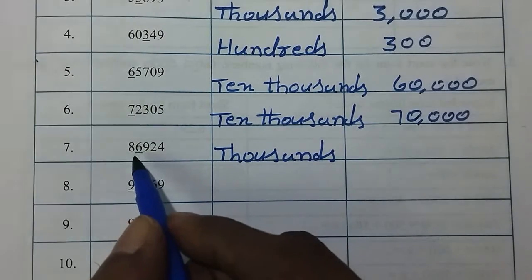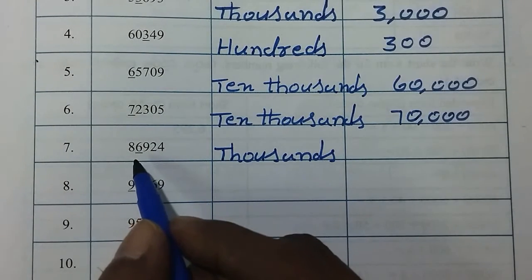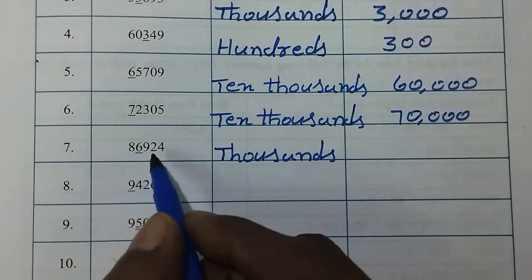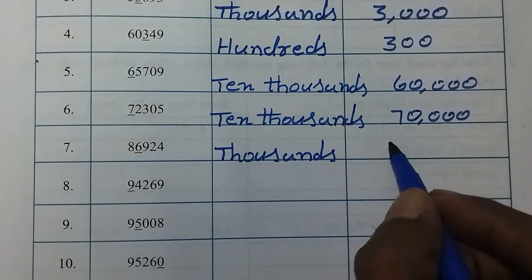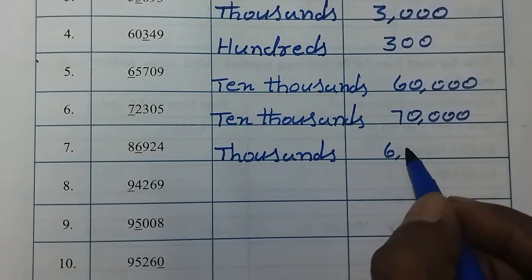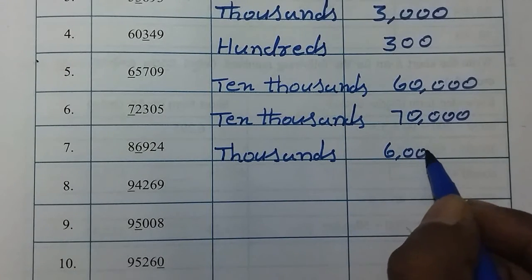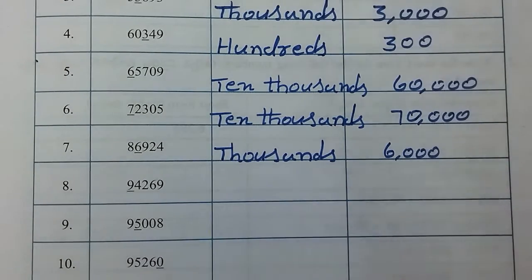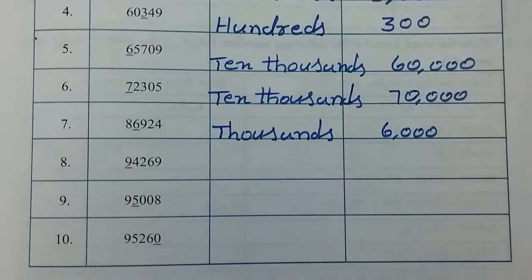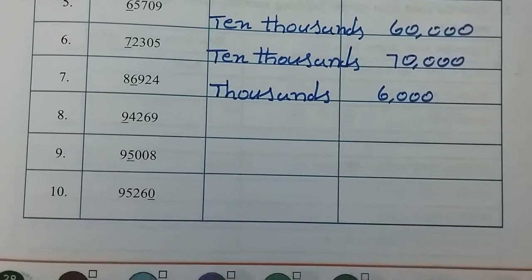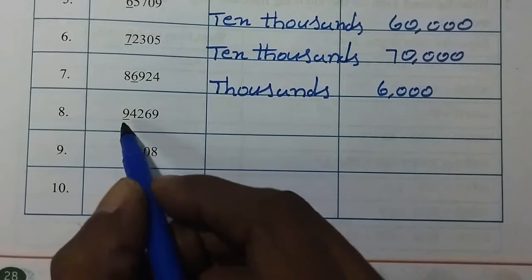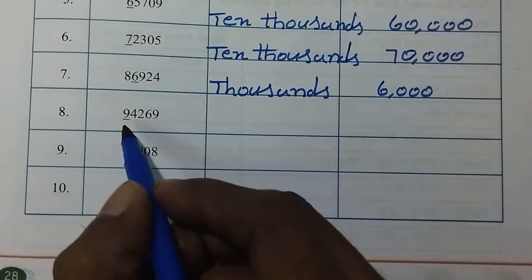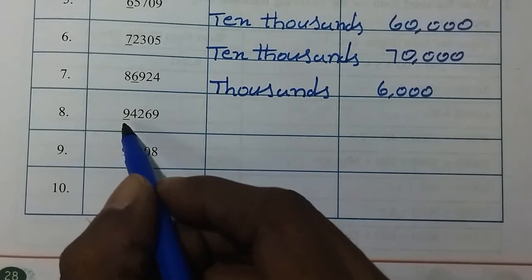6,000s to the left — the place value will be 6,000s to the left. Next, we will see here — 9s to the left.